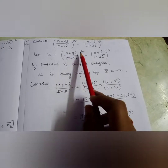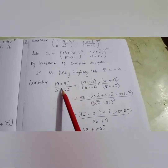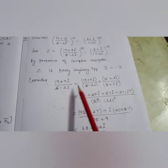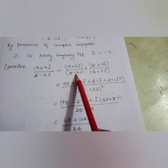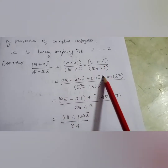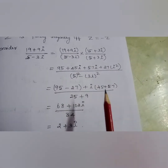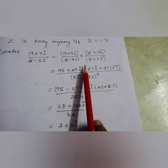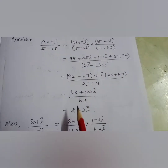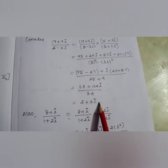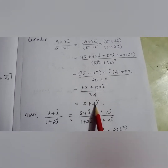Consider the first expression (19 + 9i)/(5 − 3i) and bring it to rectangular form. To do this, multiply and divide by the conjugate of the denominator, that is (5 + 3i)/(5 + 3i). We multiply the numerator and in the denominator apply the (a + b)(a − b) = a² − b² formula. Taking 34 outside, I am getting it to be 2 + 3i.